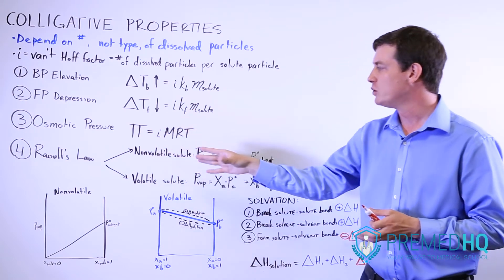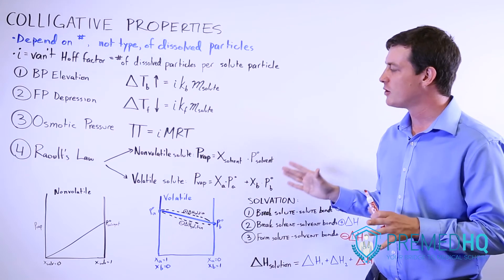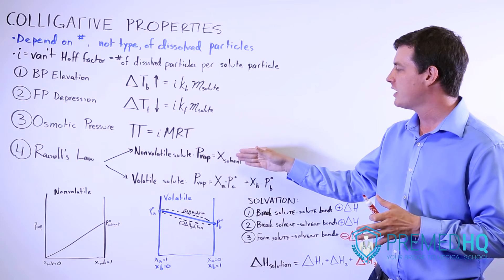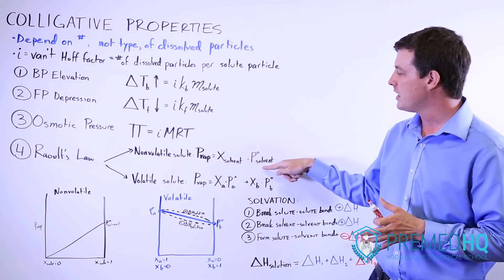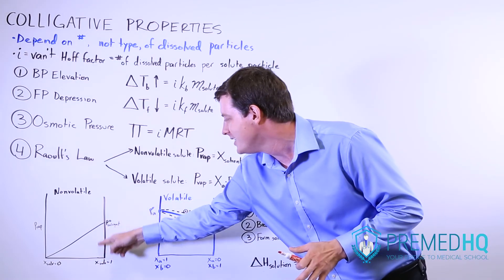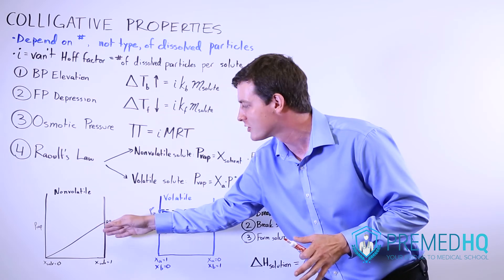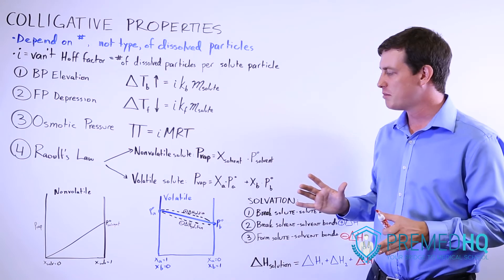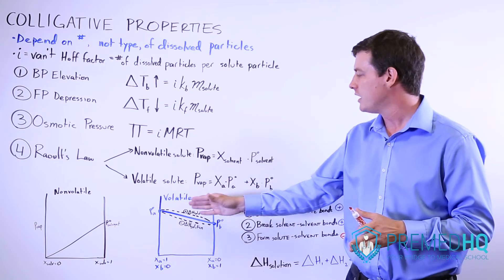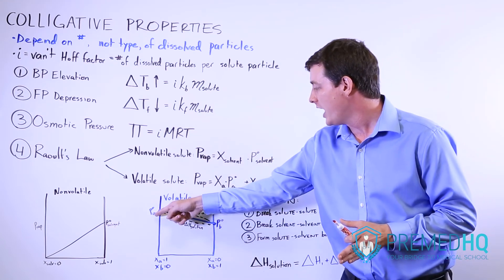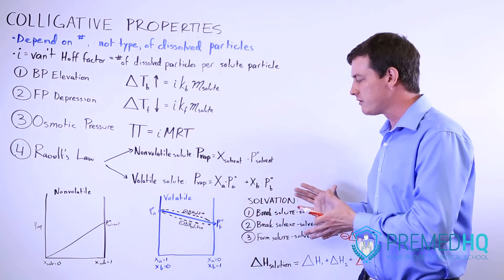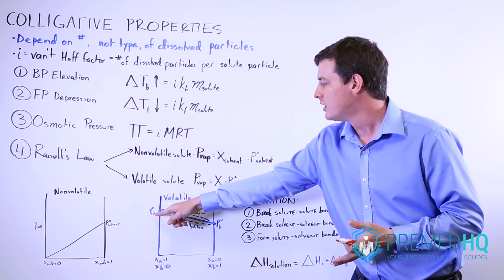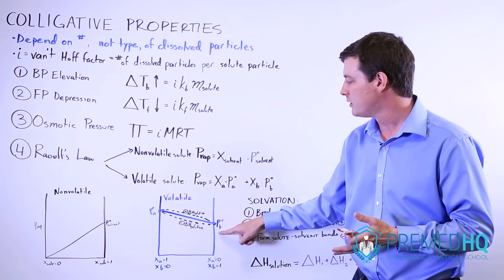With a non-volatile solute — one that has no vapor pressure of its own — the mole fraction of solvent directly tells you what fraction of the pure solvent's vapor pressure you will observe. The graph shows that at 98% solvent the vapor pressure is very close to pure solvent, and as solute increases the vapor pressure drops. With volatile solutes that do contribute their own vapor pressure, Raoult's Law accounts for the contribution of each component, so depending on the mole fractions the total vapor pressure will favor either the vapor pressure over pure A or pure B.